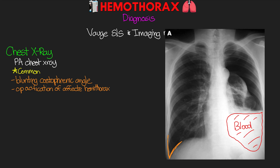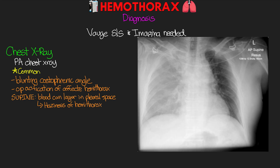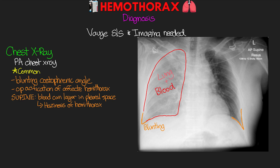In this example it's pretty obvious because it's a large hemothorax — you can see the whole opacification, which is the blood, and the rest is our lung tissue. One thing to keep an eye on is patients who are supine: the blood can layer in the pleural space rather than collect, leading to haziness of one half of the hemothorax compared to the other. Here you can see blunting at the costophrenic angle and the lung looks a little more gray and opacified, but without the large collection seen in the previous example.